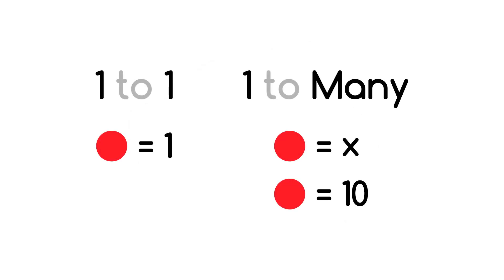The first type is one-to-one, where one point represents a single count or object. The second type is one-to-many, where one point represents a particular unit — for example, one point equals ten trees.